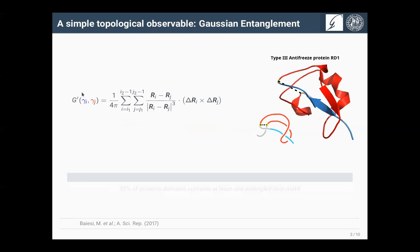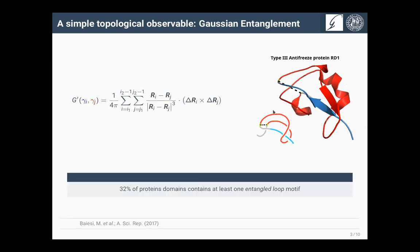Inspired by this, a group in Padova recently introduced a simple topological descriptor called Gaussian entanglement, shown here. Without going into mathematical details, this observable quantifies the self-entanglement of a protein backbone. Practically, it characterizes structures with a loop closed by a native contact (shown in red), and another chain portion called a thread (shown in blue) passing through it. These entangled loop structures are found in 32% of protein domains and are therefore quite interesting for studying folding behavior. We hope that Gaussian entanglement can tell us more about the folding kinetics of these structures.